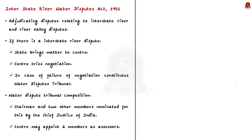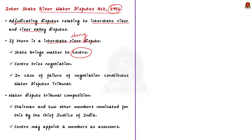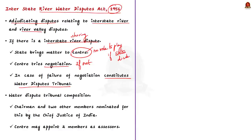Now let us see some important provisions of the Interstate River Water Disputes Act. The Parliament enacted the Interstate River Water Disputes Act 1956 for the adjudication of disputes relating to waters of interstate rivers and river valleys. If there is a dispute between states in sharing a river, they have to take it up to the central government. If the central government is convinced that the issue cannot be solved through negotiation, a Water Disputes Tribunal is constituted. Note that unless the states ask for it, the centre has no role to play.